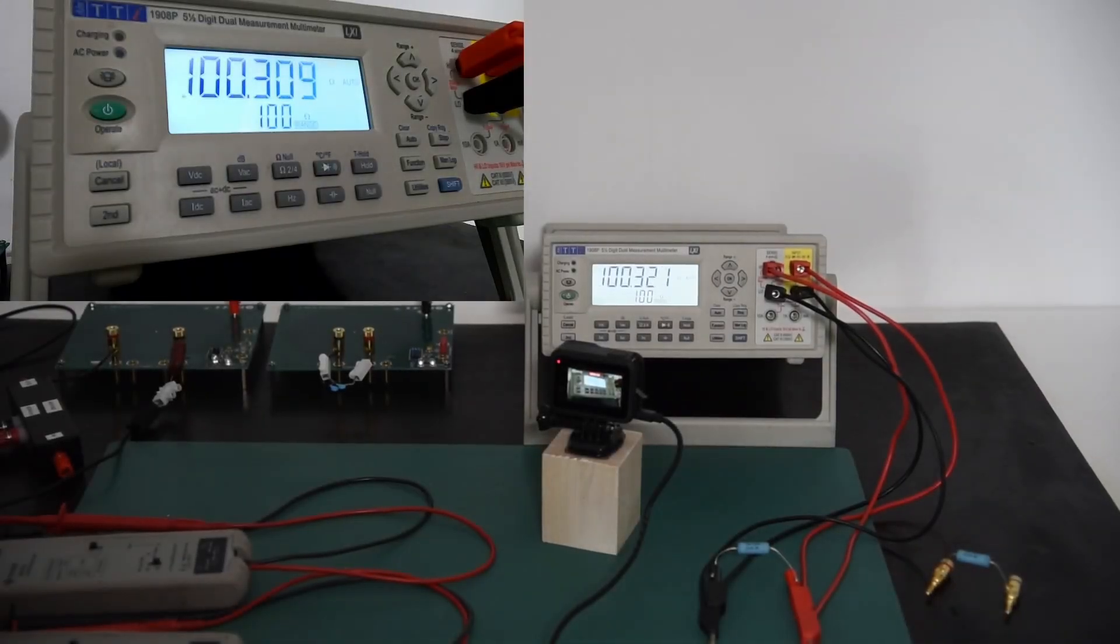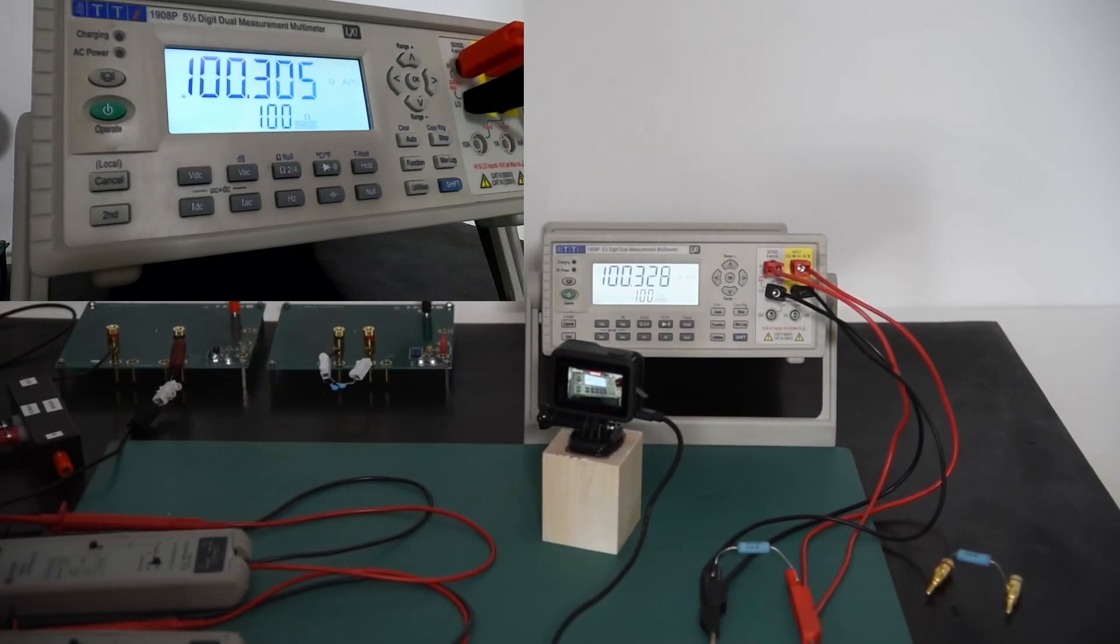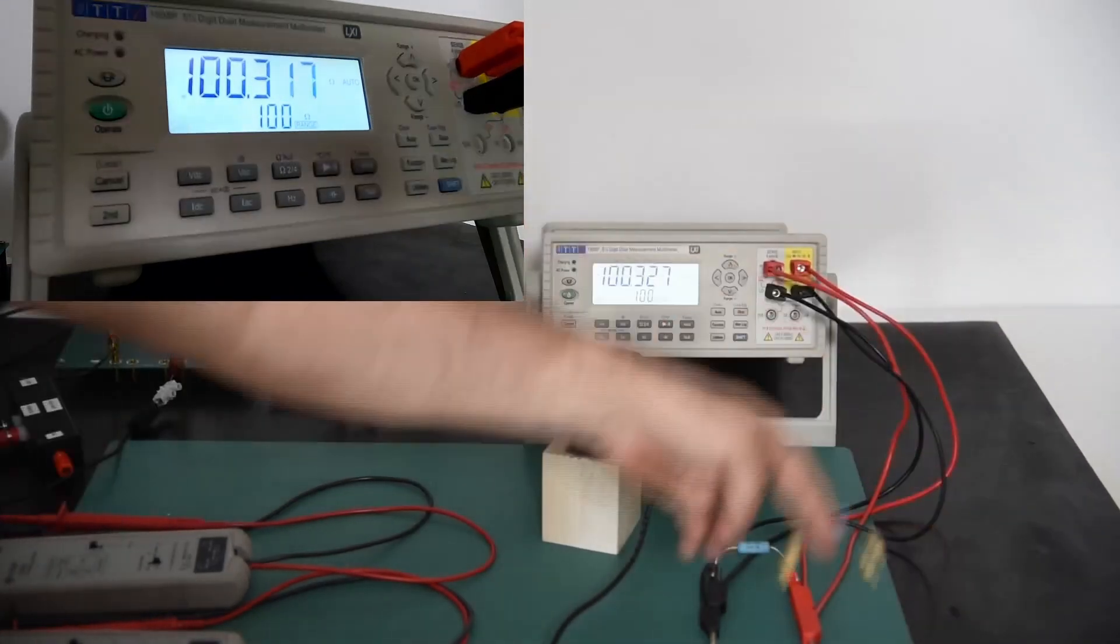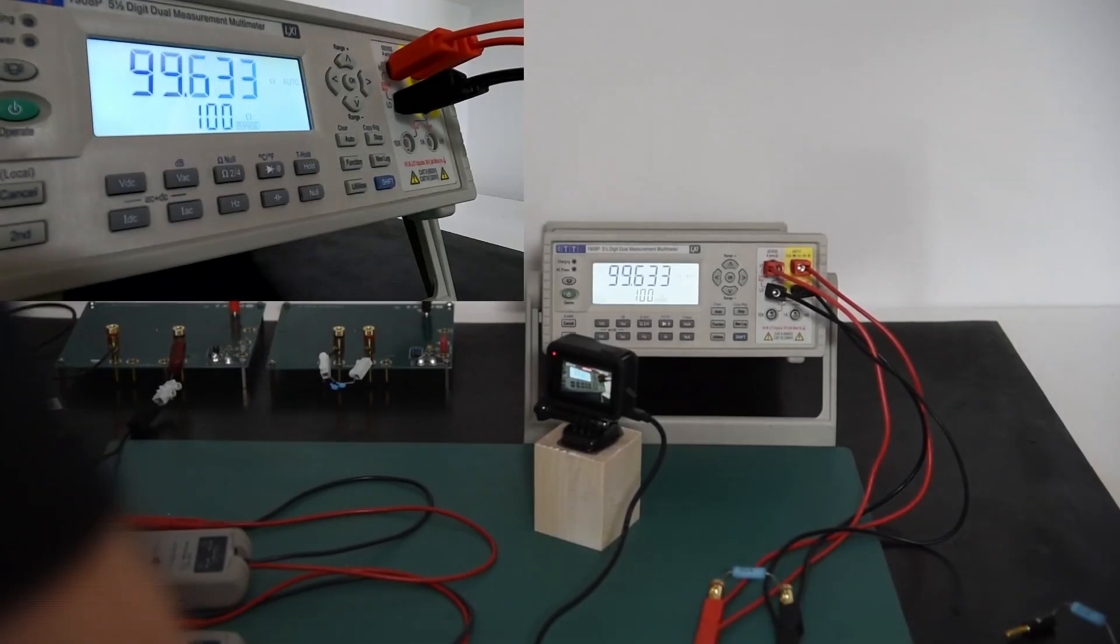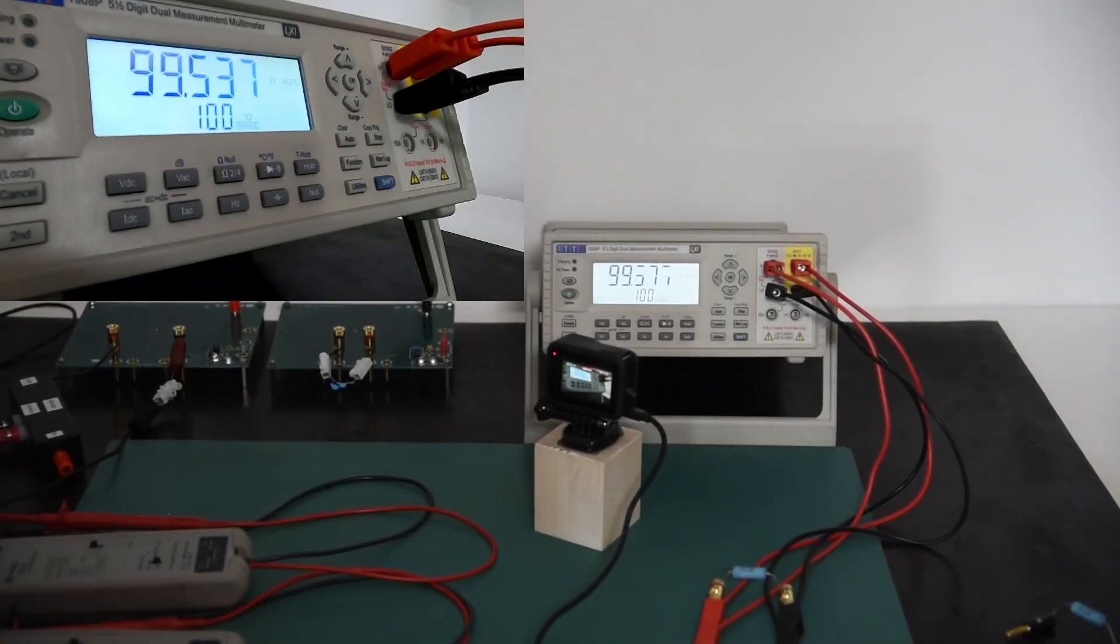Now we have connected the first 100 ohm resistor. We measure 100.3 ohm, a precision of 0.3%. On the second 100 ohm resistor, we are measuring between 99.3 and 99.6. It's also within the 1% range of precision. We can move over now to the simulation for our second test where we test the oscilloscope and the probes.